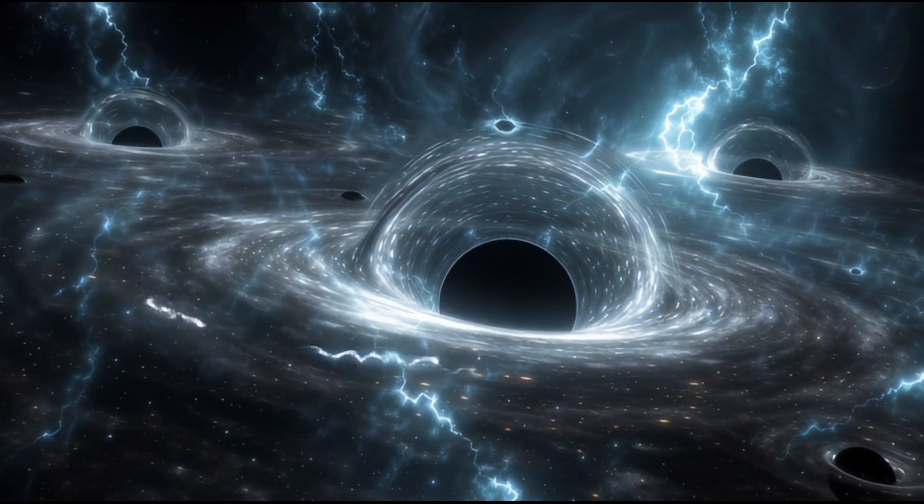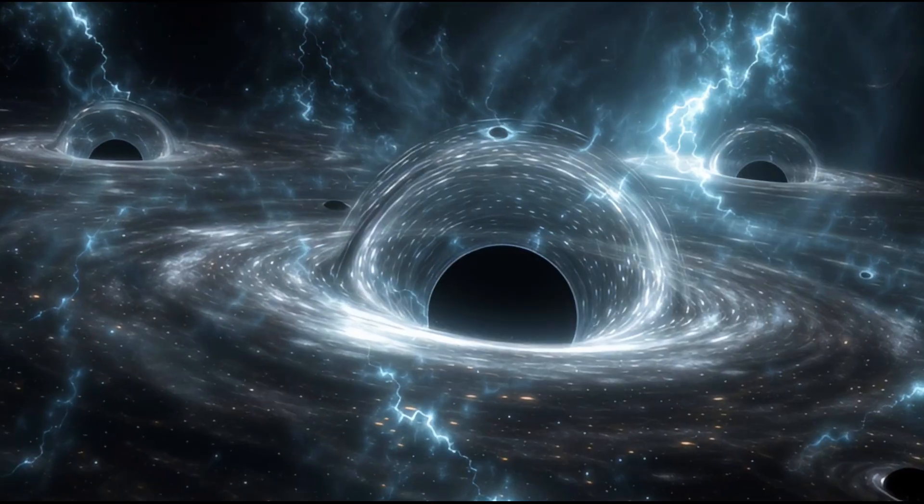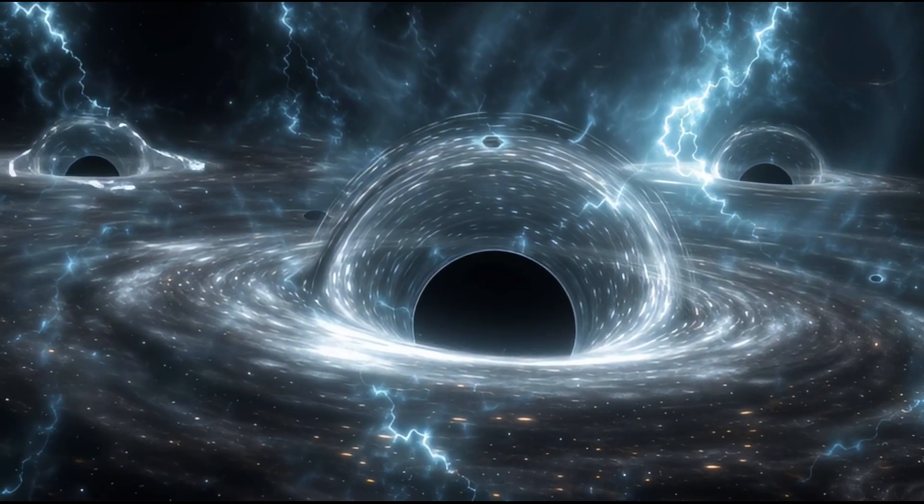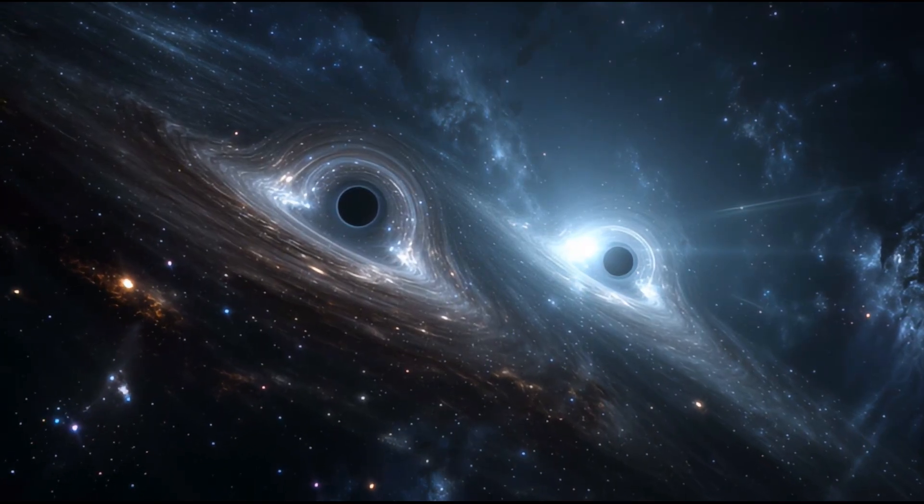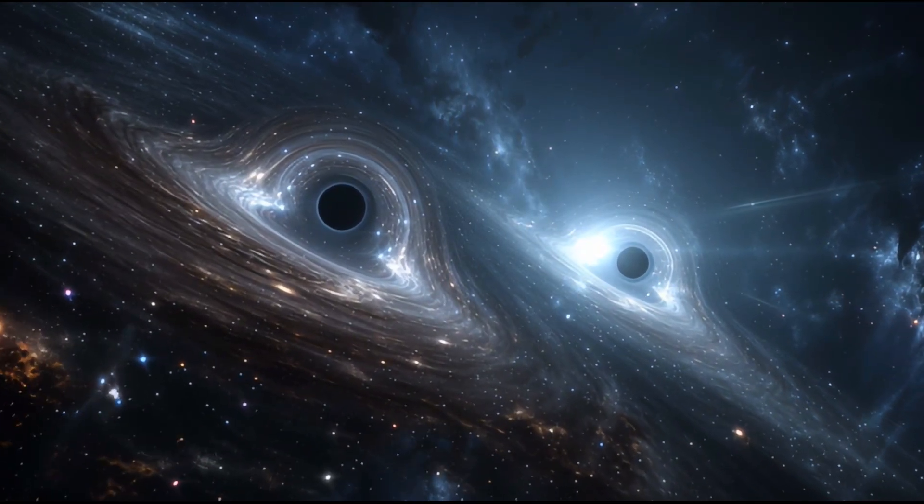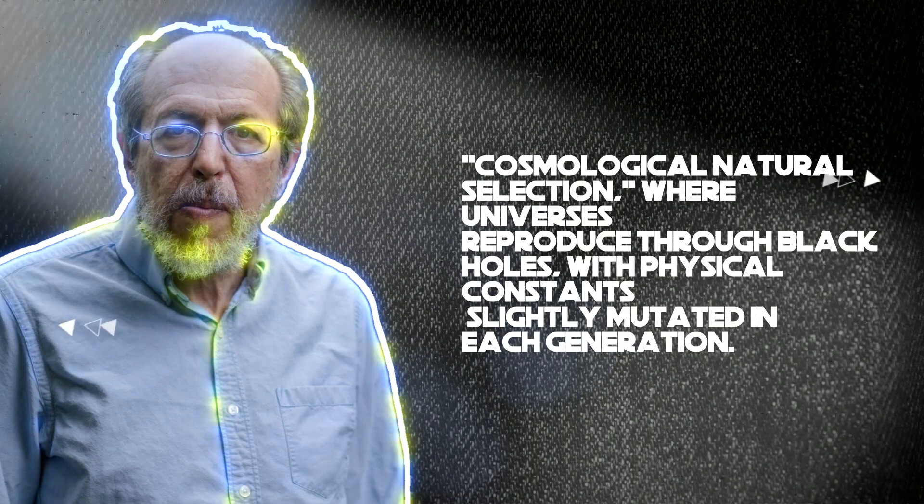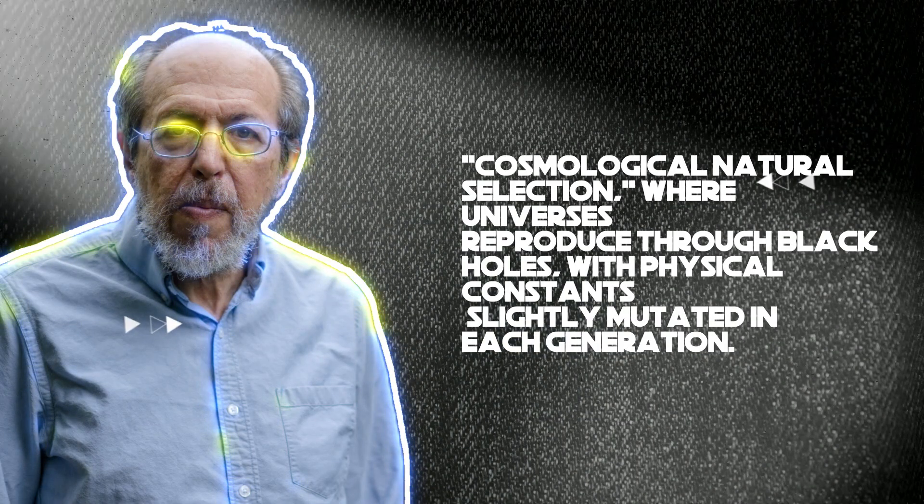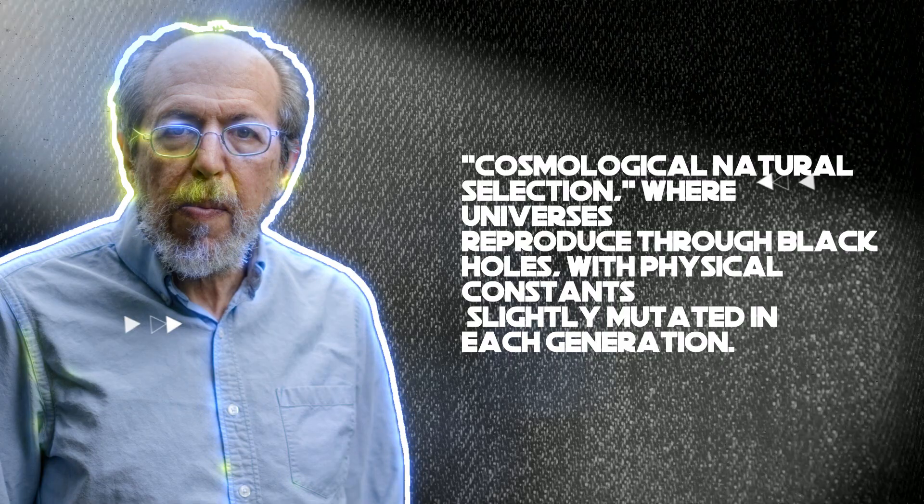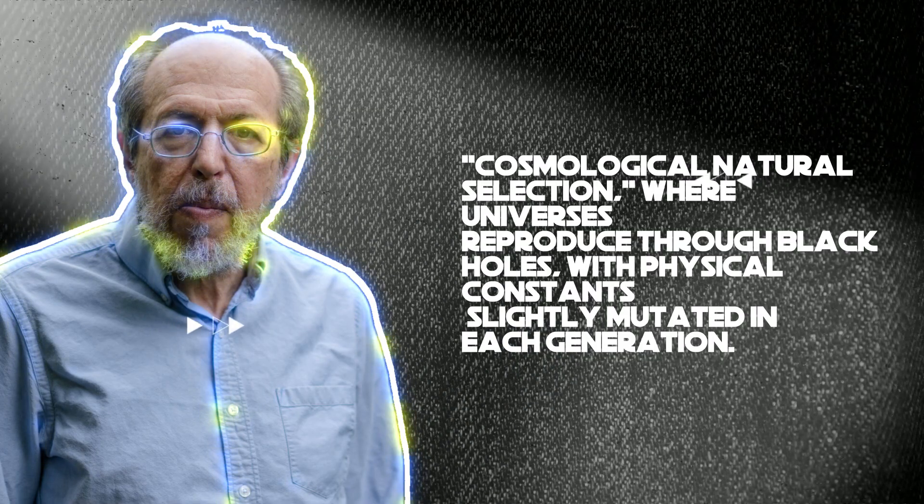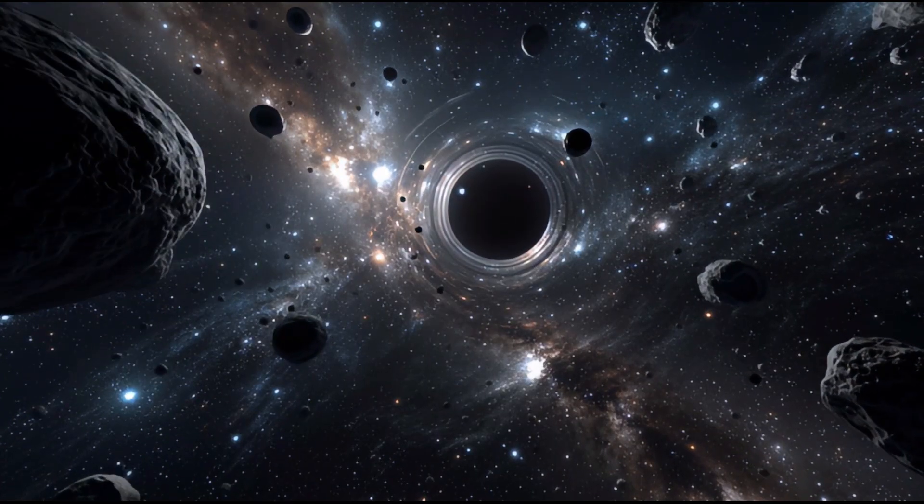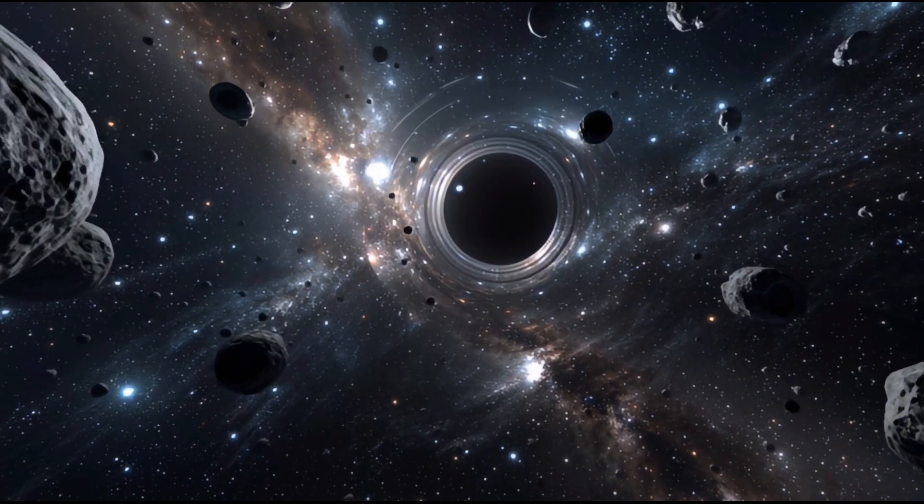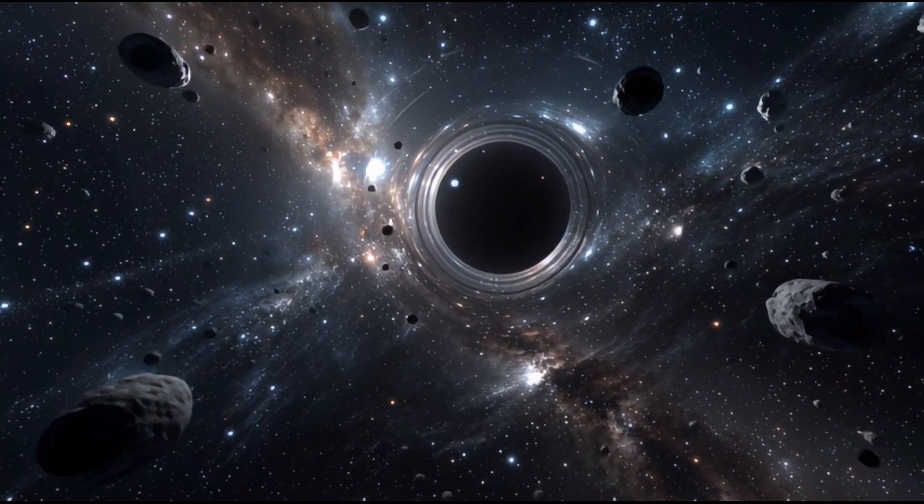The most speculative idea involves baby universes. Some solutions to Einstein's equations suggest that matter falling into certain types of black holes doesn't hit a singularity, but instead passes through to a new region of spacetime, effectively a new universe. Lee Smolin has proposed cosmological natural selection, where universes reproduce through black holes, with physical constants slightly mutated in each generation. It's evolution on a cosmic scale, completely unverifiable, but mathematically consistent with known physics.